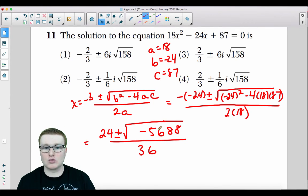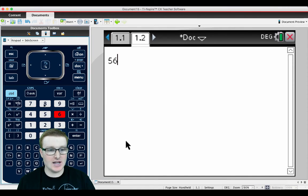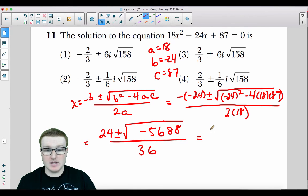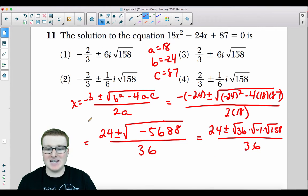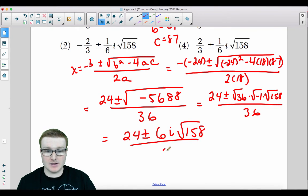Let's keep going. We get positive 24 plus minus the square root. It's negative 5,688 all divided by the number 36. Now, we need to simplify this gargantuan radical. So you need to think of the highest perfect square that goes into it. If I take 5,688 and divide it by 36, 36 does work because 158 cannot be simplified any further with a radical. So this will become 24 plus minus the square root of 36 times the square root of negative 1 times the square root of 158 all over 36. All I did is I just expanded that radical.